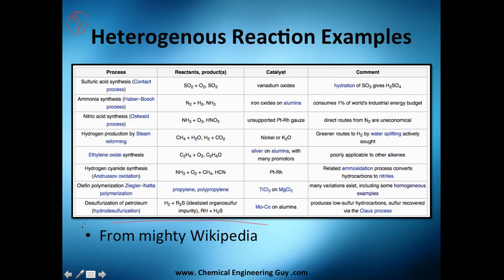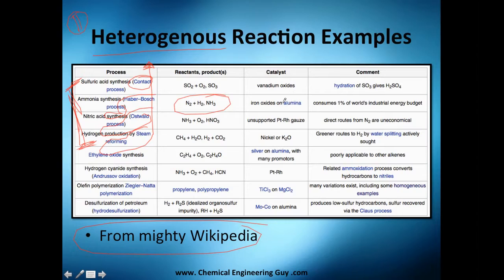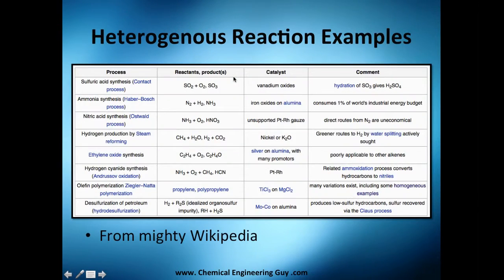I'd encourage you to look up heterogeneous reactions on Wikipedia — you'll find many common processes: the contact process, Haber-Bosch process, Ostwald process, and steam reforming. These are the top processes you should know, especially for process engineering interviews. For example, the Haber-Bosch process produces ammonia and consumes around one percent of the world's industrial energy budget — that's a significant amount.